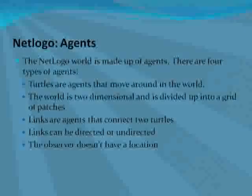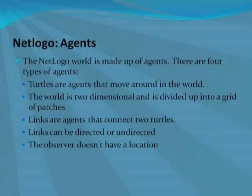The NetLogo world is made up of agents. There are mainly four types of agents: turtles, which move around in the world; the world, which is a two-dimensional grid of patches; and links, which are agents that connect two turtles. Links can be directed or undirected.